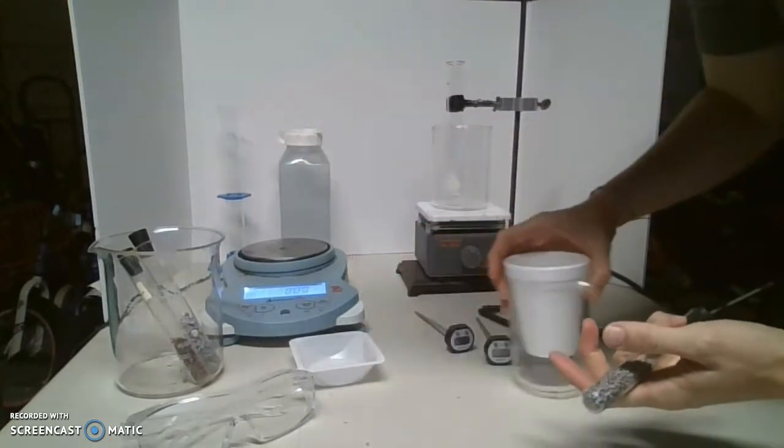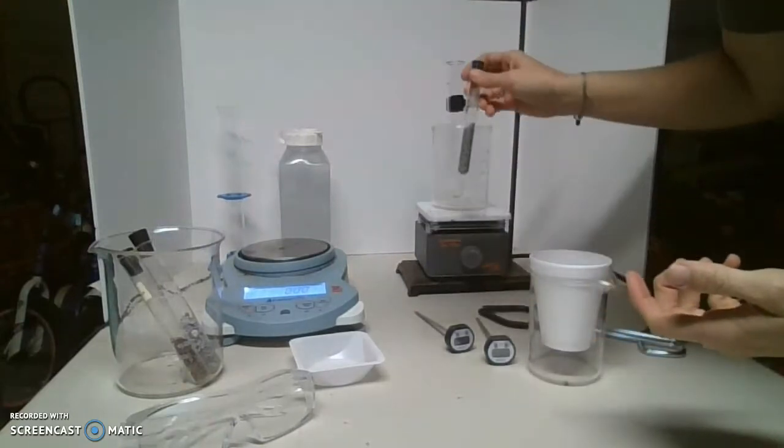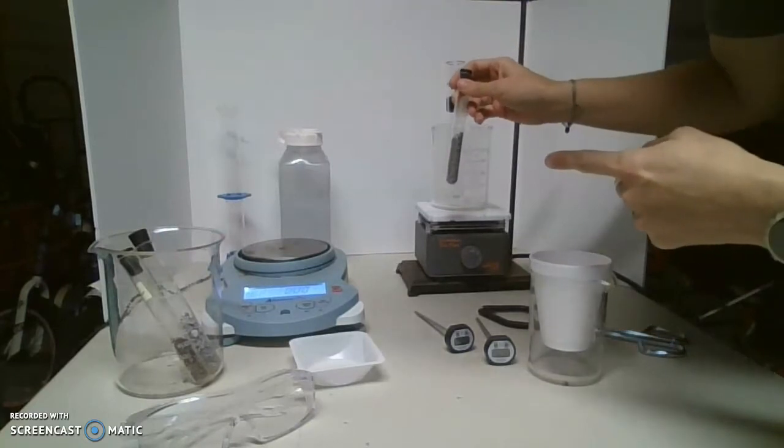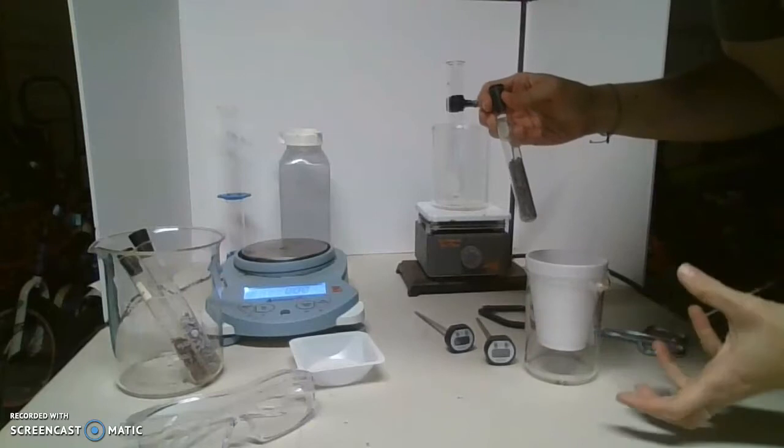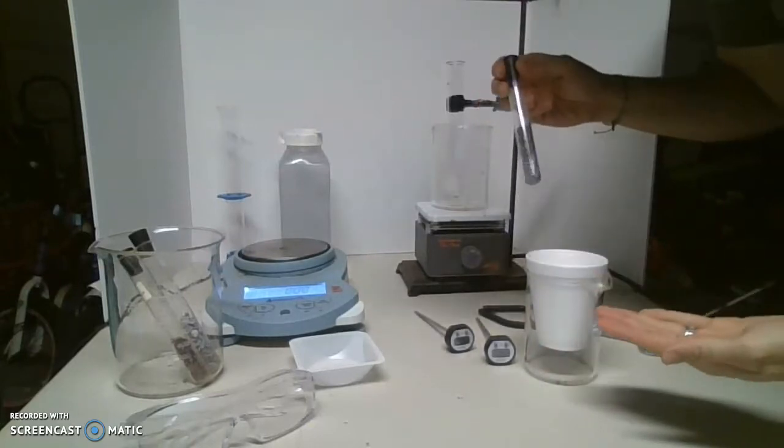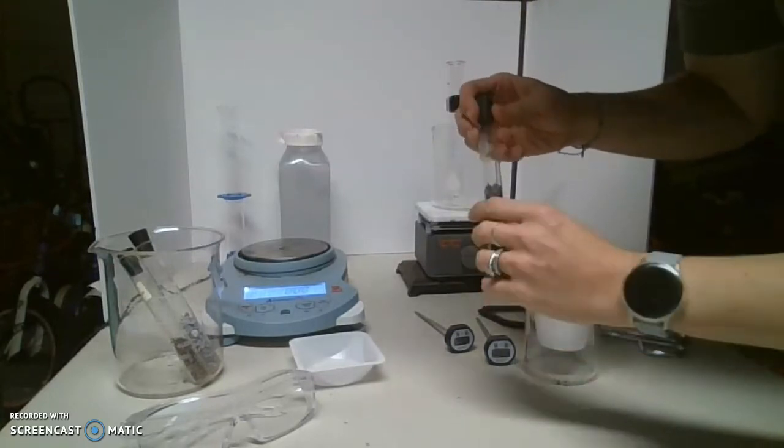A styrofoam cup that's going to have a determined amount of water inside. And we're going to heat up our tin metal in a hot water bath and then pour it into the cup. The cup is going to have water in it and it will get hot from this hot metal. And then we will go through and do some calculations to determine what it is.